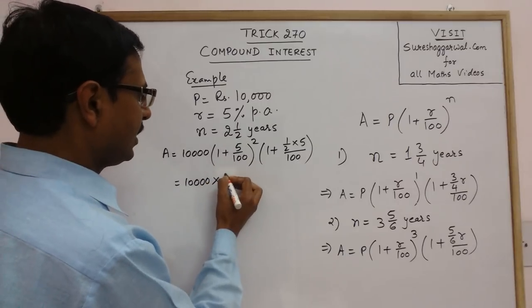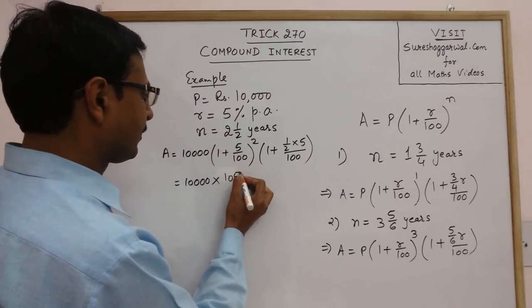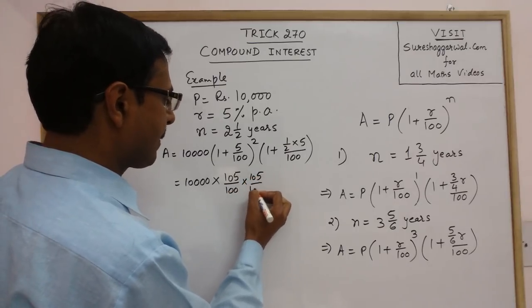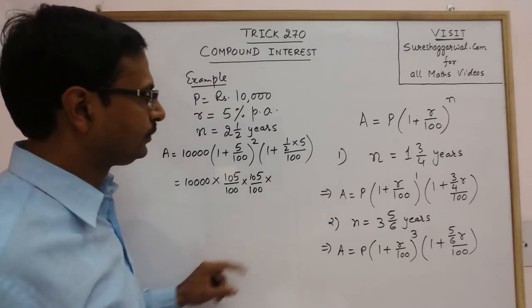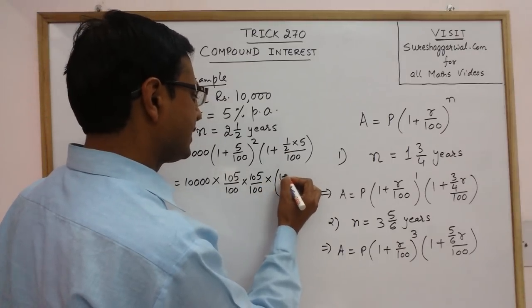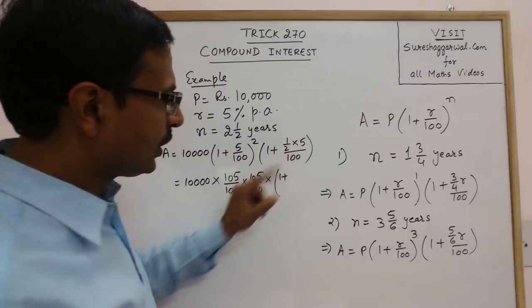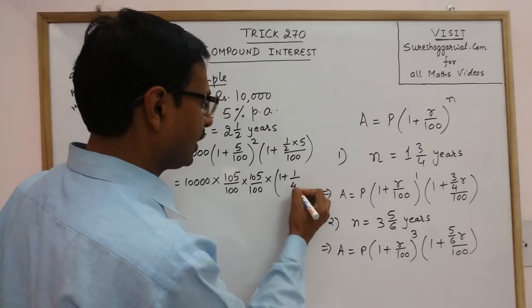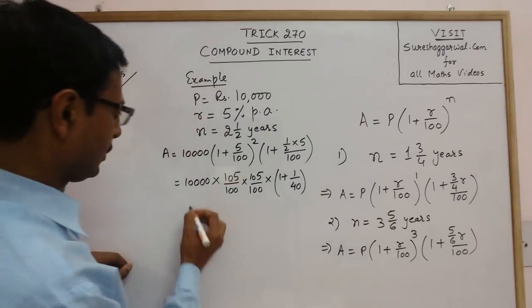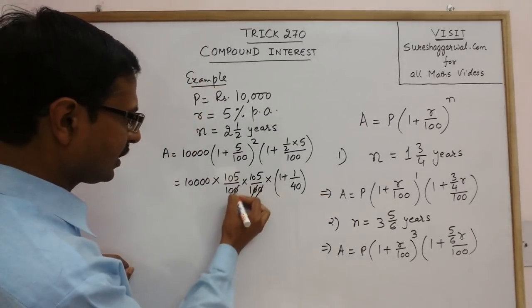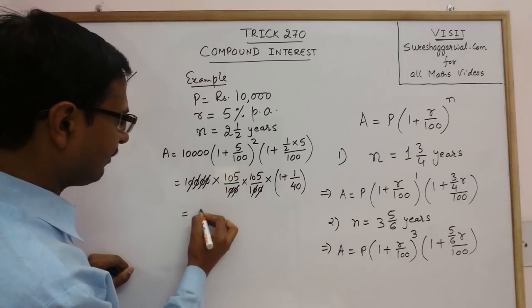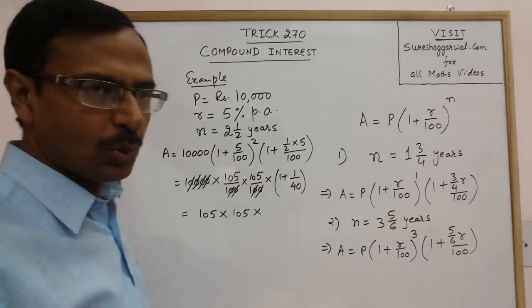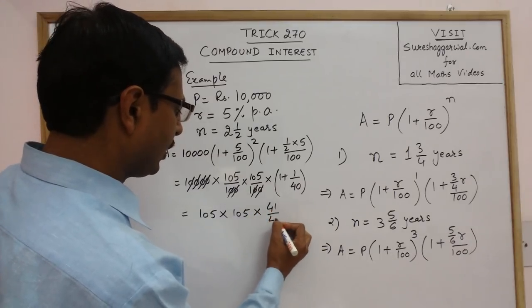Into 105 upon 100, into, now this part 1 plus, this is 5 by 200, so 1 by 40, so 4 zeros, so 4 zeros they cancel out and you have 105 into 105 into, this is 41 upon 40.